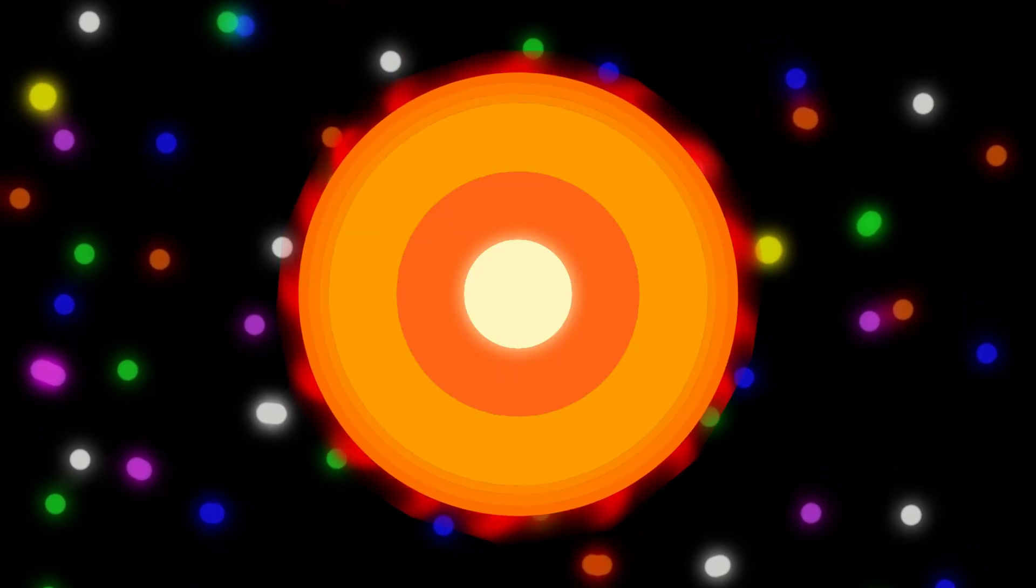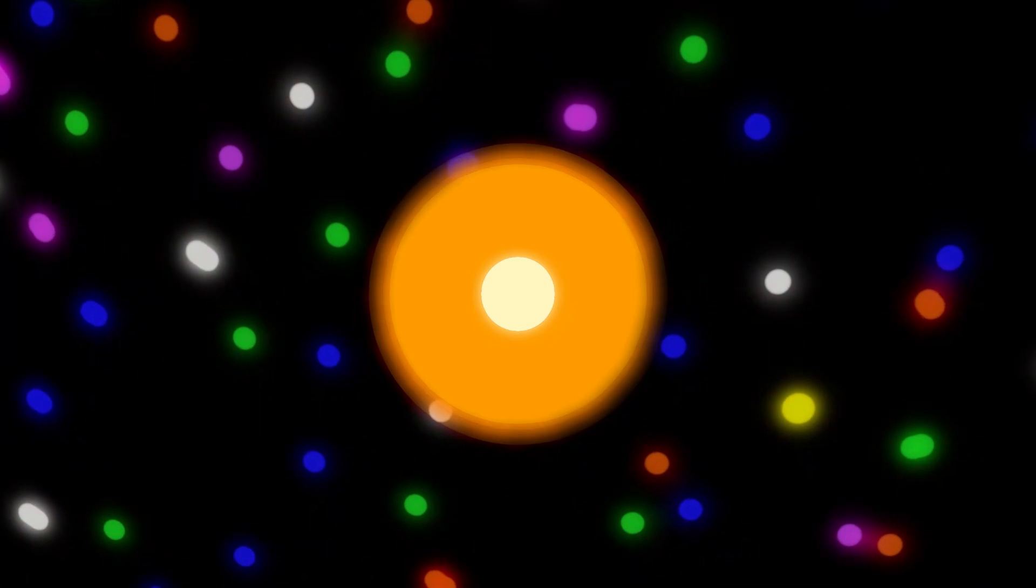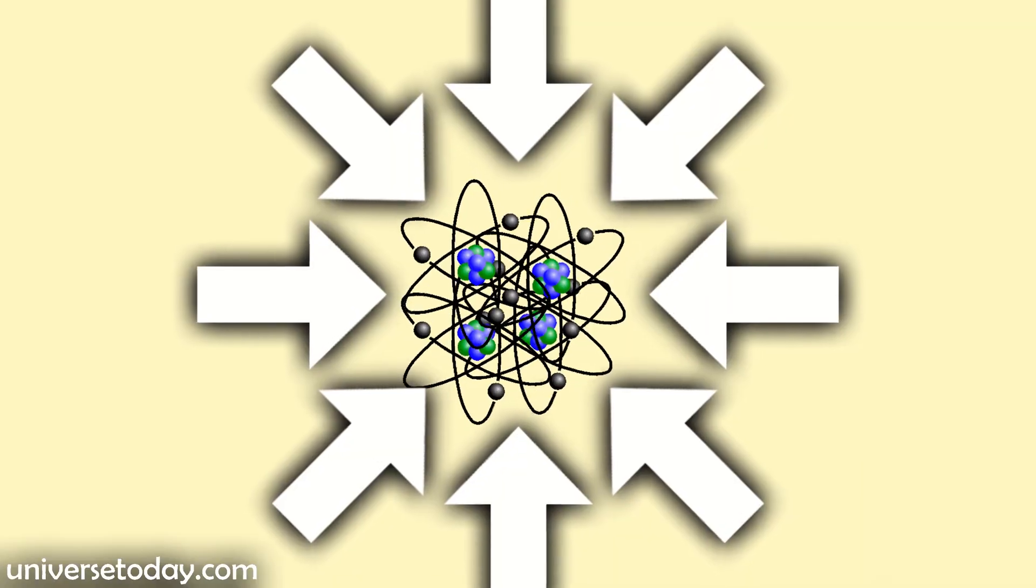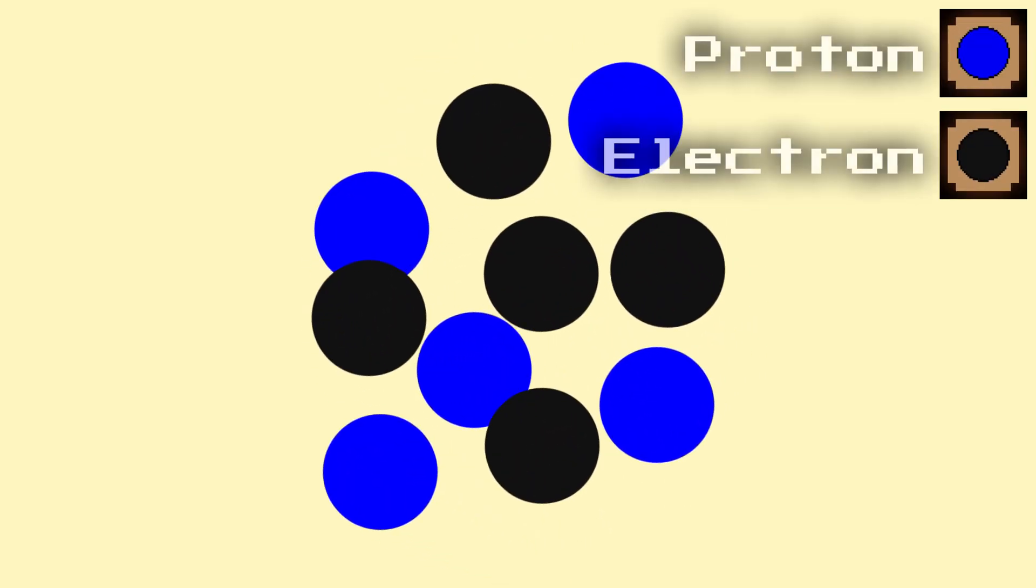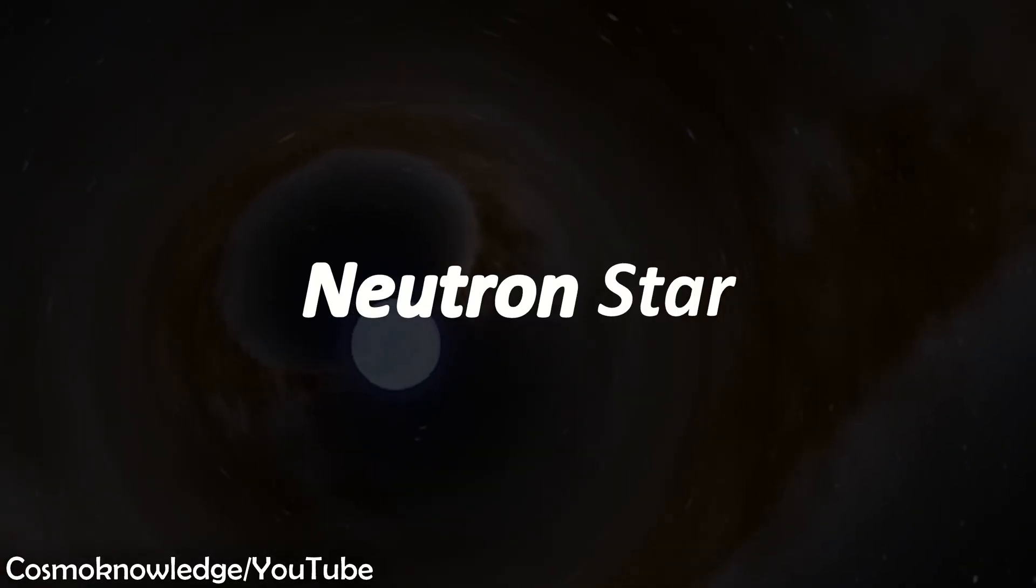Because it is so massive, its own gravity pushes it into itself. We call this an implosion. Due to this, the atoms are mushed together. And protons and electrons are forced together to form neutrons. That's why it's called a Neutron Star.